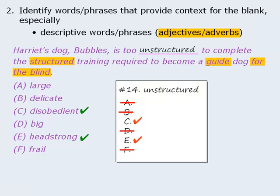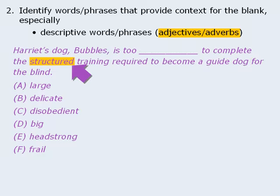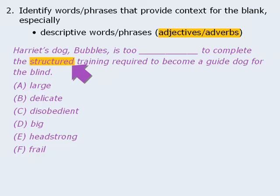It's important to point out that this entire question hinged on only one descriptive word. Furthermore, if we change 'structured' to 'physically challenging,' then the context changes completely. In that case, what kind of dog would have difficulty completing physically challenging training? Our prediction might be something like 'unhealthy,' and answer choices B and F would be supported by the contextual clues. So as you can see, descriptive words play a very large role in solving sentence equivalence questions.